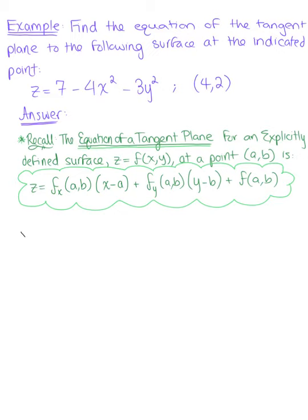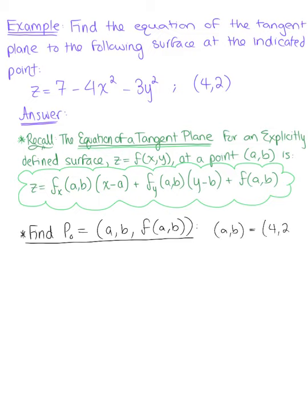The first thing we need to do is find the ordered triplet. We want to find P₀, which is defined as (a, b, f(a,b)). Our given point here gives us a, b equals (4, 2), and we want to find its corresponding z value.